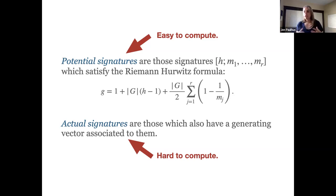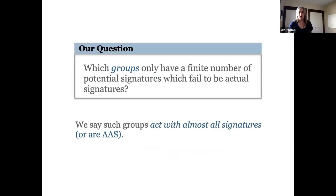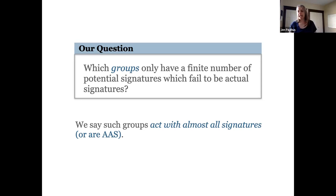Our question was: which groups have almost all of their potential signatures as actual signatures? This would mean that beyond a certain point, any potential signature you write down would be an actual signature — we wouldn't need to spend time doing the group theory of finding generating vectors. We call such groups AAS — acting with almost all signatures — meaning only finitely many potential signatures fail to be actual signatures.